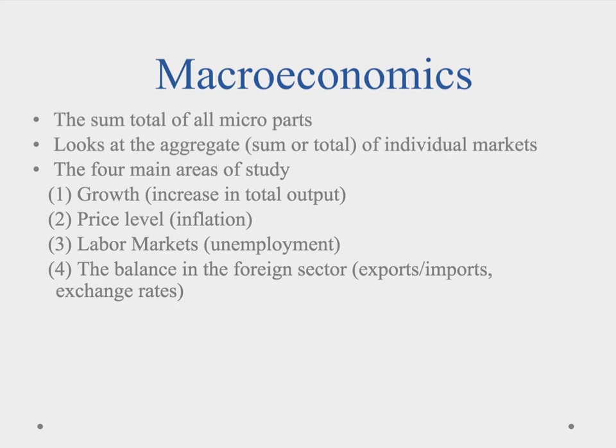The next category we will cover later in the year is macroeconomics, which focuses on the sum total of all micro parts — it looks at the aggregate of individual markets. The four main areas of study are: growth, which is an increase in total output; price levels, which we refer to as inflation or deflation; labor markets, including unemployment rates; and the balance in the foreign sector, covering exports, imports, and exchange rates, which we'll be covering later in the year.